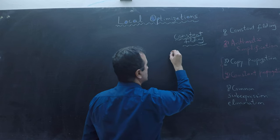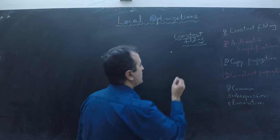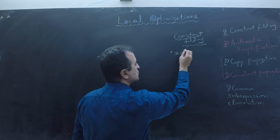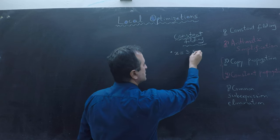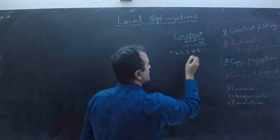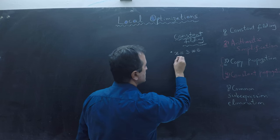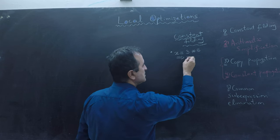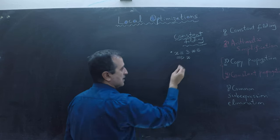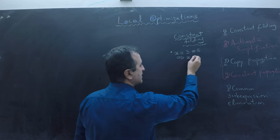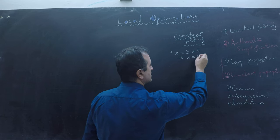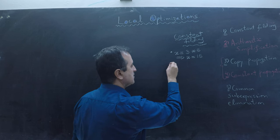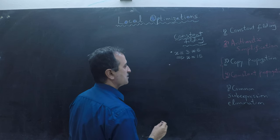For example, if I have a line of code x equals to 3 times 5, then I transform this line of code by computing values at compile time and writing x equals to 15. Now I don't have to compute those values at runtime and my code will run faster.